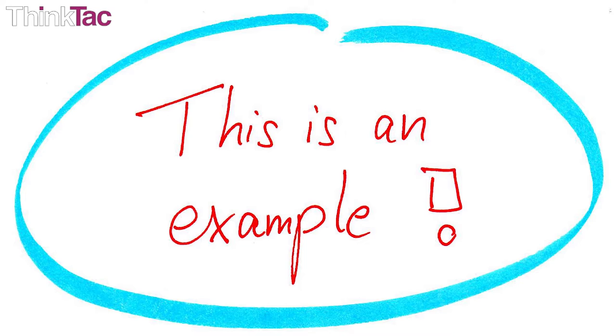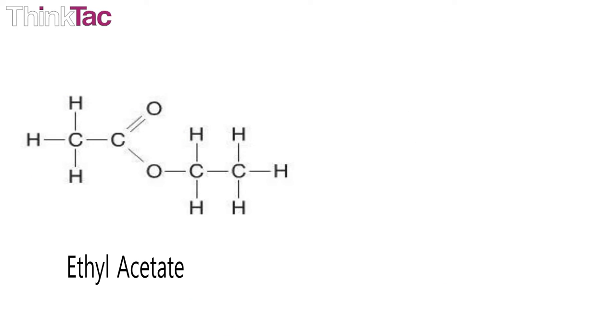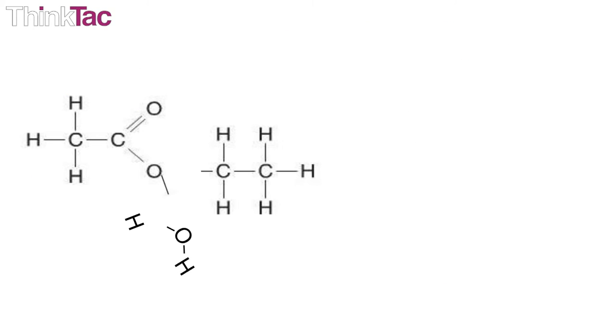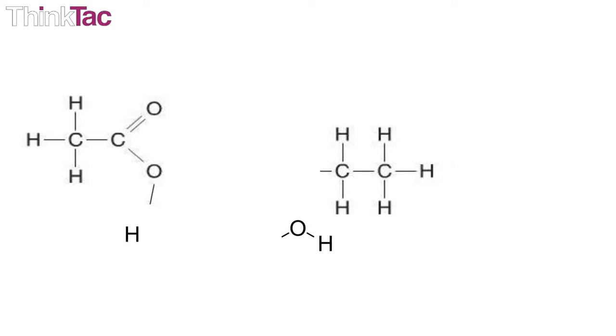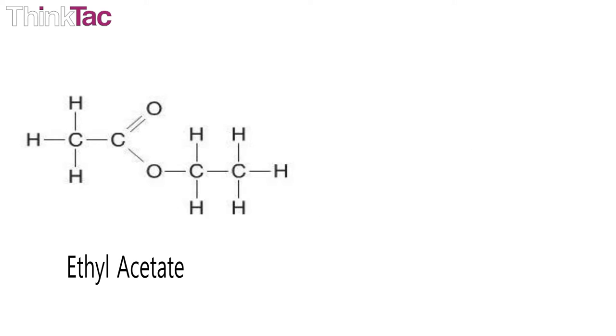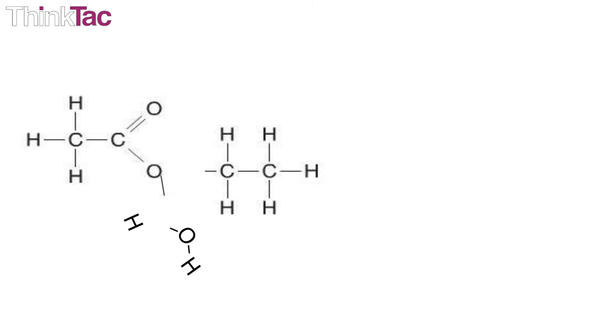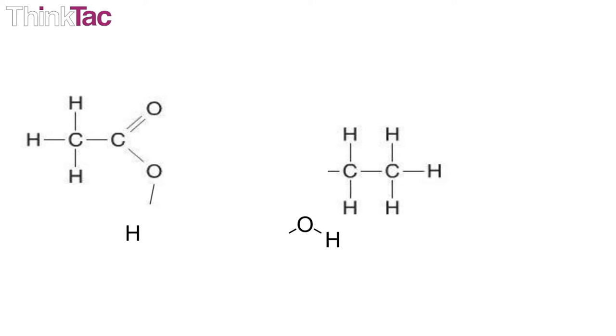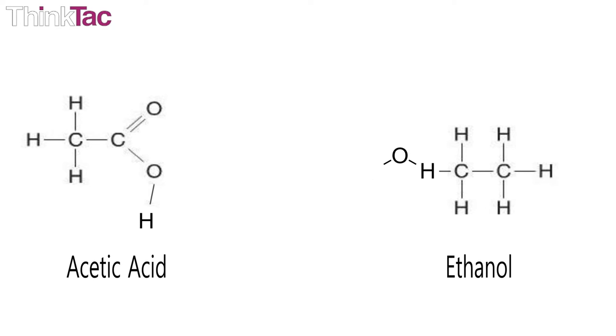For example, the reaction below, where ethyl acetate and water can be heated and you get acetic acid and ethanol. Here, ethyl acetate is an ester which reacts with water to form an acid and an alcohol. In the above reaction, the ester is boiled in water.